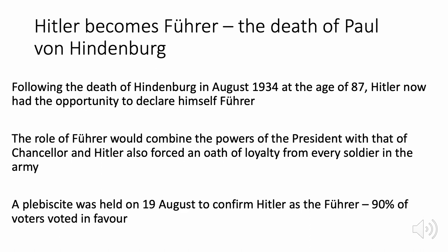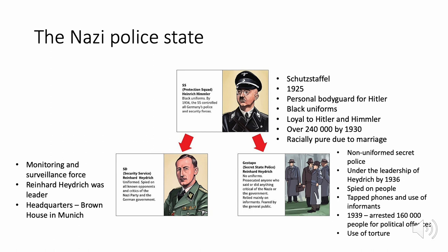Now the Nazis were in control, we examine the Nazi police state, which had three components. First, the SS — the Schutzstaffel — Hitler's personal bodyguard, loyal to Hitler and Himmler. Under the SS was the SD, a monitoring and surveillance force led by Reinhard Heydrich, whose job was to spy on Nazi opponents. The SS also managed the Gestapo — a secret, non-uniformed police force also under Heydrich's leadership — which tapped phones, used informants, and arrested 160,000 people in 1939 alone for political offences.